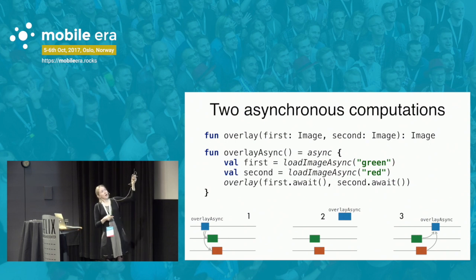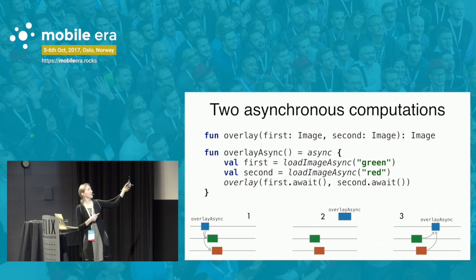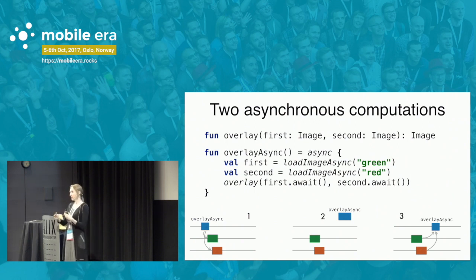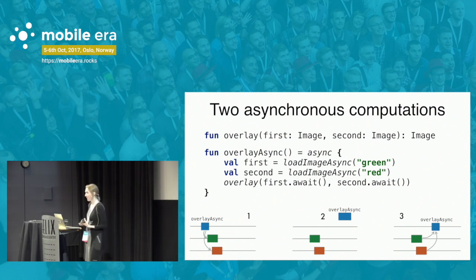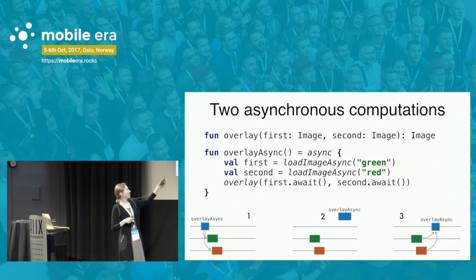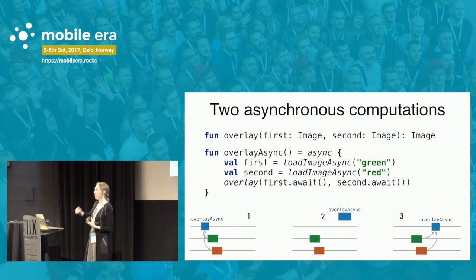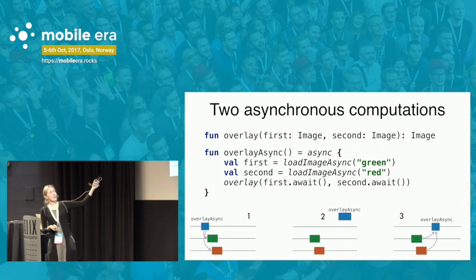In this example, we want to load two images concurrently on two different threads. We call load image async twice, giving us two references to the started computations. We then wait until both images are loaded, and after that overlay the two images. The code is rather sequential. This illustrates the goal: with this concept of suspending computation, we can write code as we would write it for threads in a consecutive manner — but with threads it would be wrong, while with coroutines it works because coroutines are suspended instead of blocking threads.